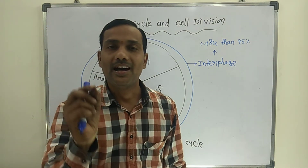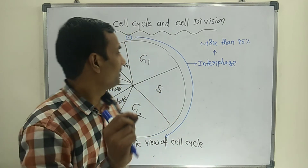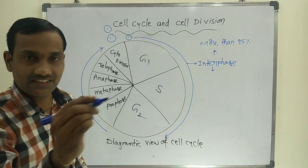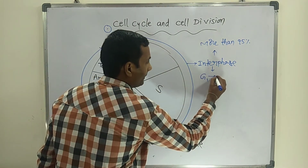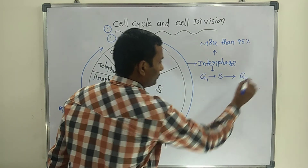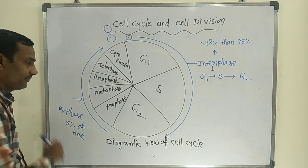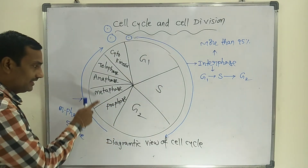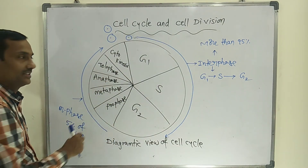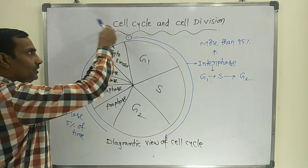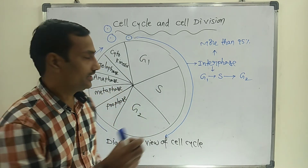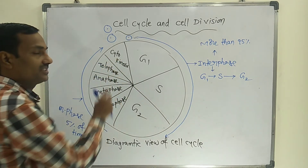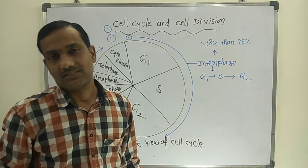For exam purposes: if asked to arrange sub-phases of interphase in sequential order, the sequence is G1, S, G2. For M phase sequential order — karyokinesis has four sub-phases. At the end of telophase, two nuclei will form within the cell. After cytokinesis, finally two daughter cells will form.